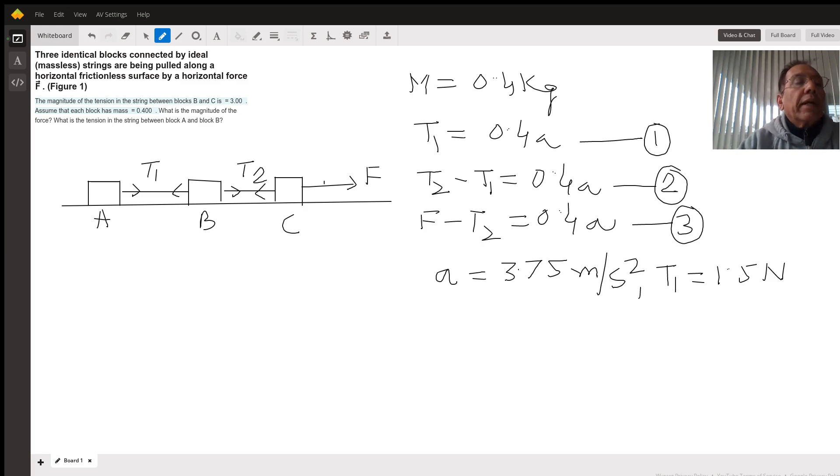This question is on free body diagrams. Three identical blocks connected by massless strings are being pulled by a horizontal force.